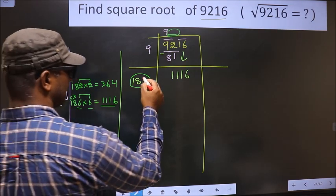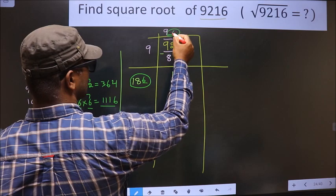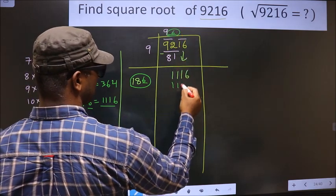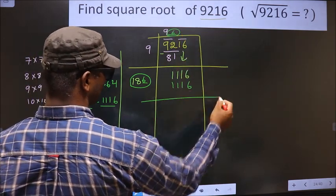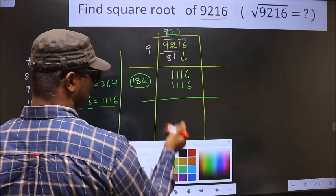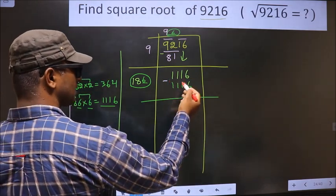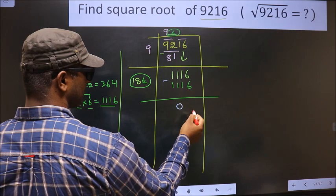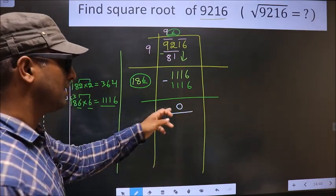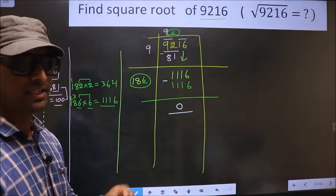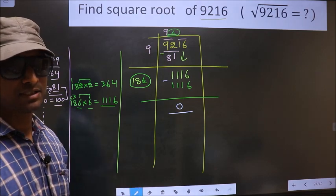So here you take 6, here also 6, and here 1116. Now you subtract. 1116 minus 1116, we get 0. We got 0 means given number is a perfect square.